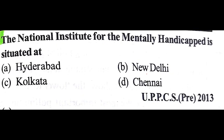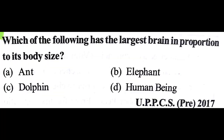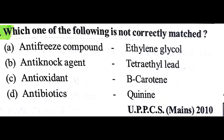The National Institute for the Mentally Handicapped is located at Hyderabad. DNA Fingerprinting and Diagnostic Research Centre is also located at Hyderabad. Which of the following is not correctly matched? Antifreeze compound — ethylene glycol: true; antiknock agent — tetraethyl lead: true; antioxidant — beta-carotene: true; antibiotic — cunein: no, cunein is not an antibiotic. So our answer is D.